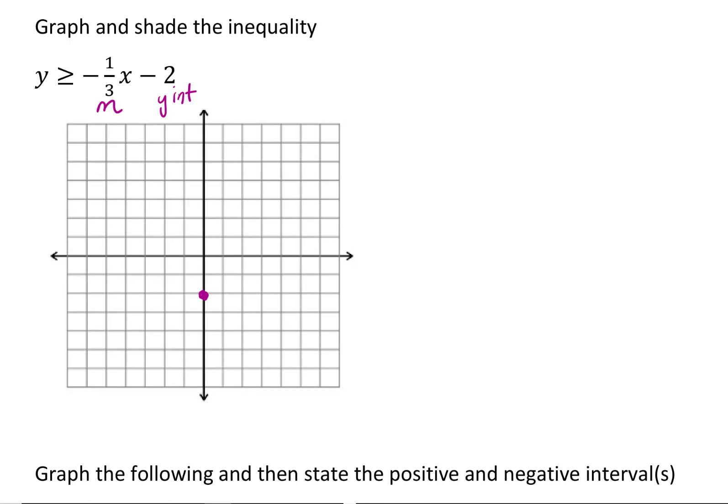Down one to the right three, down one to the right three, and then I'm just going to also go in the other direction to complete the graph. So I go back to my y-intercept, up one to the left three, up one to the left three, up one to the left three.